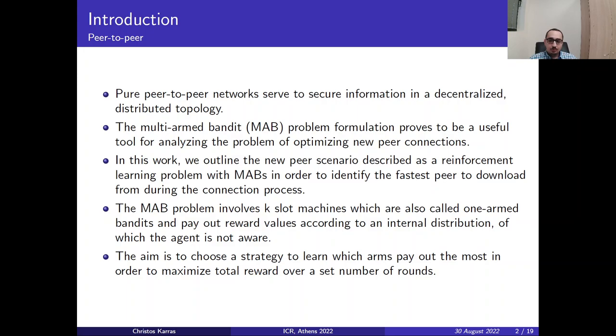Starting with the introduction, Peer-to-Peer Networks aim to secure information in Decentralized Distributed Topology. The Multi-Arm Bandit, or MAB Problem, proves to be a useful tool to analyze the problem of optimizing new peer connections. In this work we outline the new peer scenario described as a reinforcement learning problem with Multi-Arm Bandits in order to identify the fastest peer to download from during the connection process.